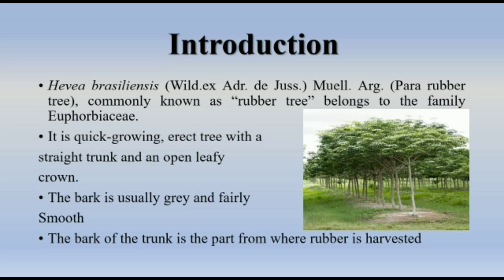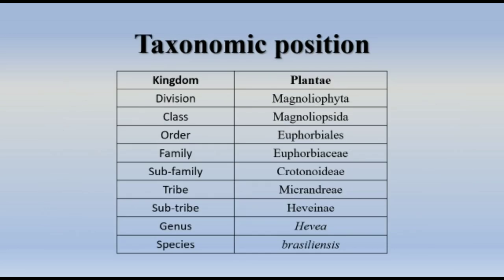Taxonomic position: Kingdom - Plantae, Division - Magnoliophyta, Class - Magnoliopsida, Order - Euphorbiales, Family - Euphorbiaceae, Sub-family - Crotonoideae, Tribe - Micrandeae, Sub-tribe - Heveinae, Genus - Hevea, Species - brasiliensis.